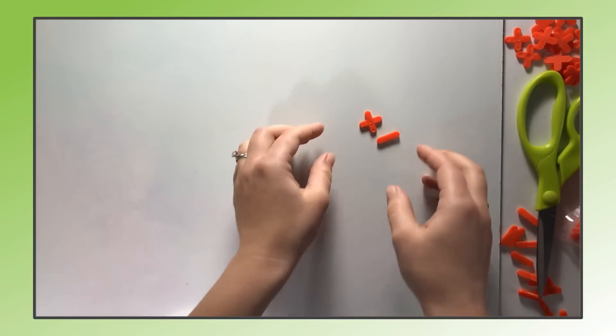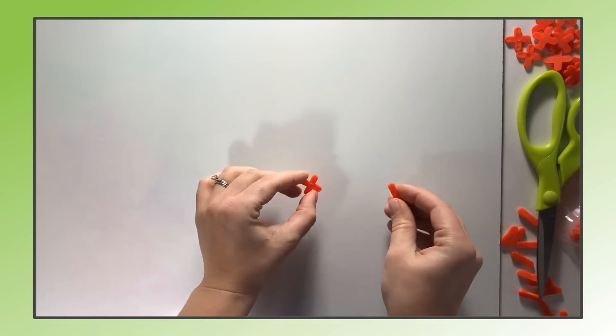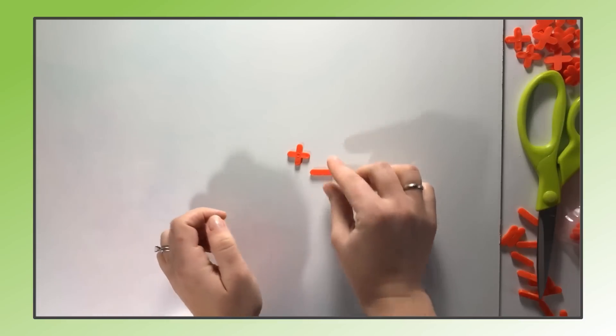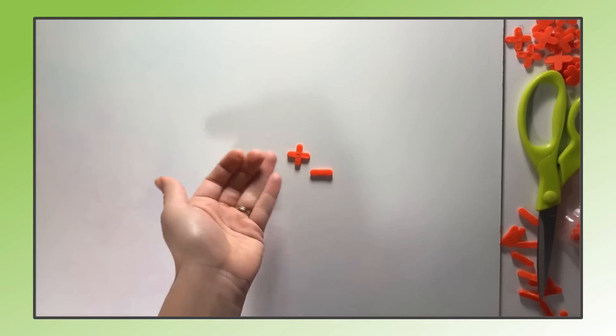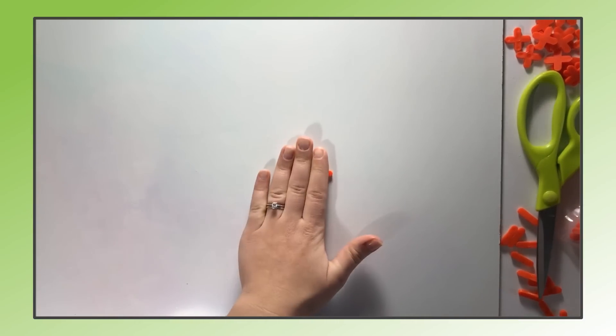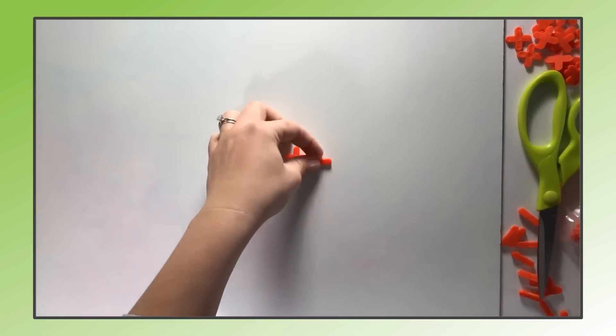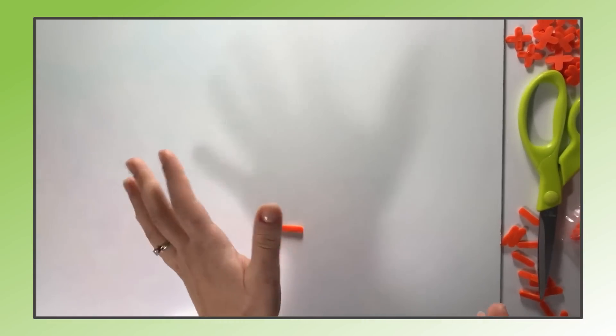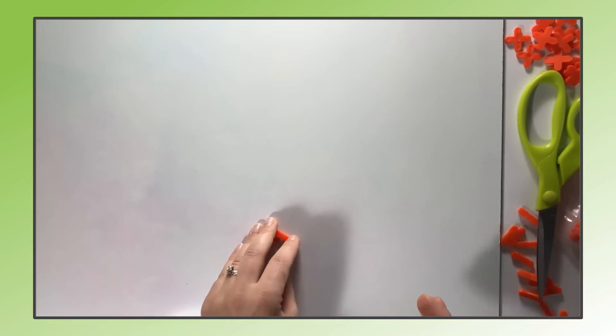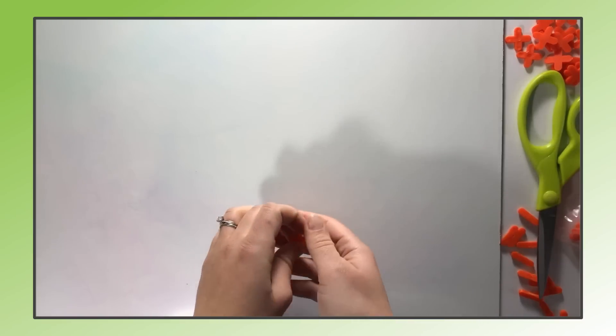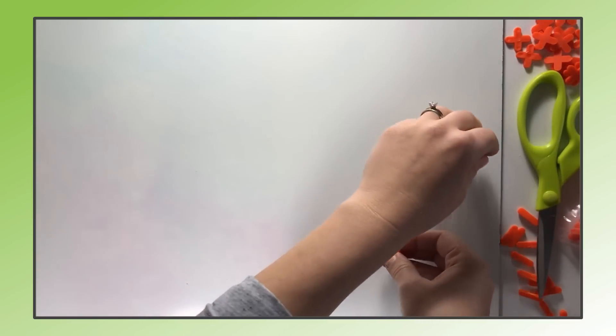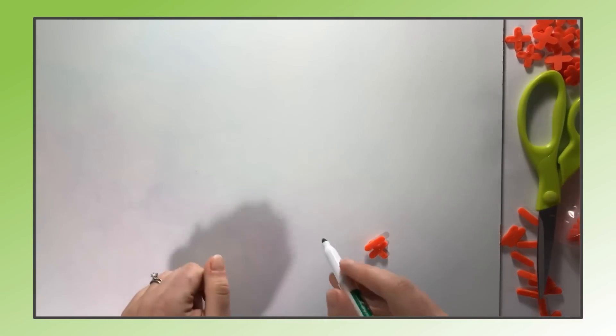The first thing you want to do is introduce the concept of a zero pair. Anytime they have one plus and one minus, that represents a positive one and a negative one - it adds up to zero. Adding or subtracting zero doesn't affect anything. We can always add zero or take away zero without affecting the problem at all. Do that on the overhead projector or the ELMO so everyone can see it together. Then try a few sample problems together with the whole class so they can see what you're doing.